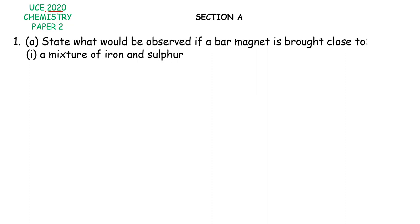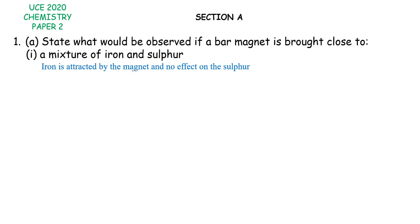Question 1: State what would be observed if a bar magnet is brought close to a mixture of iron and sulfur. If you have a mixture of iron together with sulfur, iron is a metallic substance which can be attracted by a bar magnet because it can easily be polarized and becomes magnetic. However, sulfur is non-magnetic and will not be affected. So we are likely to observe that the iron — or gray solid — is attracted by the magnet, and the yellow powder (sulfur) is not affected by the bar magnet.